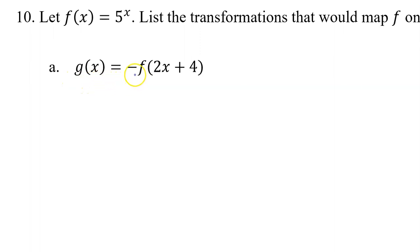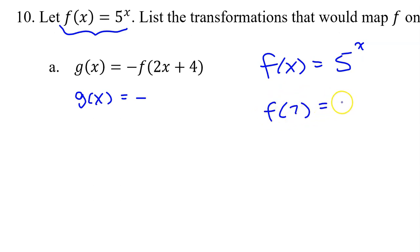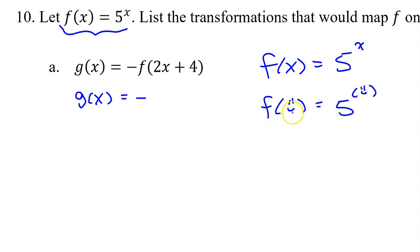Part A: g of x equals the opposite of f at 2x plus 4. Obviously you bring down this negative sign. How do I do f at 2x plus 4? Well remember, f of x is 5 to the x power. If I wanted to do f at 7, that would be 5 to the 7 power. If I wanted to do f at pi, that would be 5 to the pi power. f at smiley face would be 5 to the smiley face power. So f at 2x plus 4 will be 5 to the 2x plus 4 power.